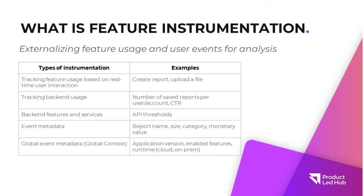What is feature instrumentation? This is where you go to your engineering team and ask them to write code to track your feature. Feature instrumentation is really about externalizing feature usage and user events for analysis — you want to expose how the feature is being used and send that data as part of that feature usage.